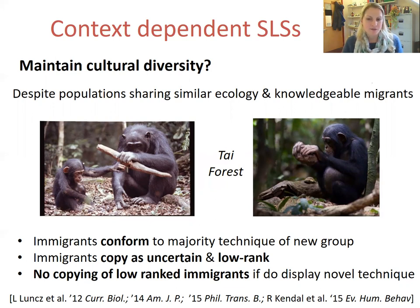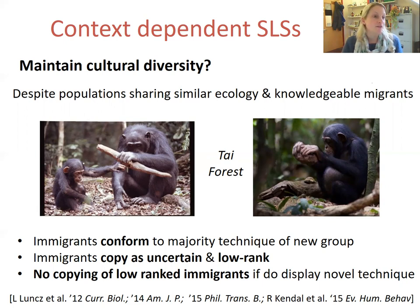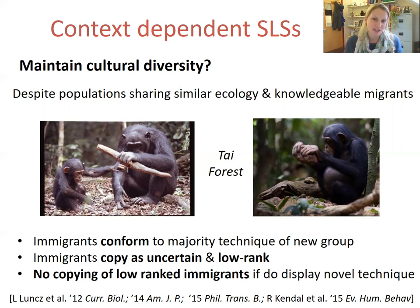In our 2015 paper, we suggested that a combination of several simultaneous biases or social learning strategies may be responsible for the patterns of cultural variation observed in chimpanzees and perhaps in humans as well. This brings us to the end of this lecture segment, and in the next section we'll move on to considering content-dependent social learning strategies.